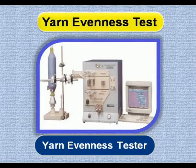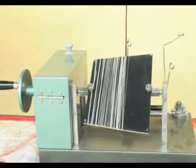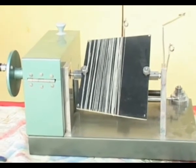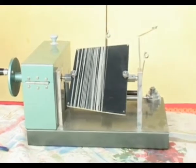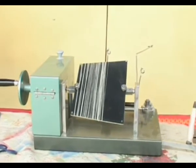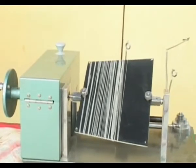The most common method of continuously monitoring the evenness of the yarn is based on passing the yarn through a parallel plate continuously and monitoring the capacity electronically. A change in the mass of dielectric in the condenser changes its capacity.